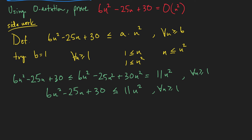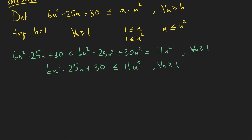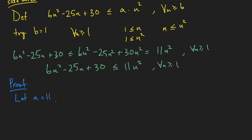Let's do the formal proof. Let A equal 11 and B equal 1 — both are positive constants. For proofs you have to be more concise and write things out. I'll use some abbreviations, but you'll get the point.